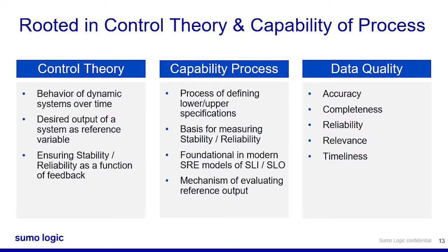Observability-driven development is rooted in control theory. Control theory is about understanding the behavior of a dynamic system over time — understanding an entity and its state in relation to some point in the past. It focuses on understanding the desired output of a system as a reference variable, and ensuring stability and reliability as a function of feedback. The information coming out of a system represents its internal state, so if a metric or KPI is stable, I know the service is stable as well.